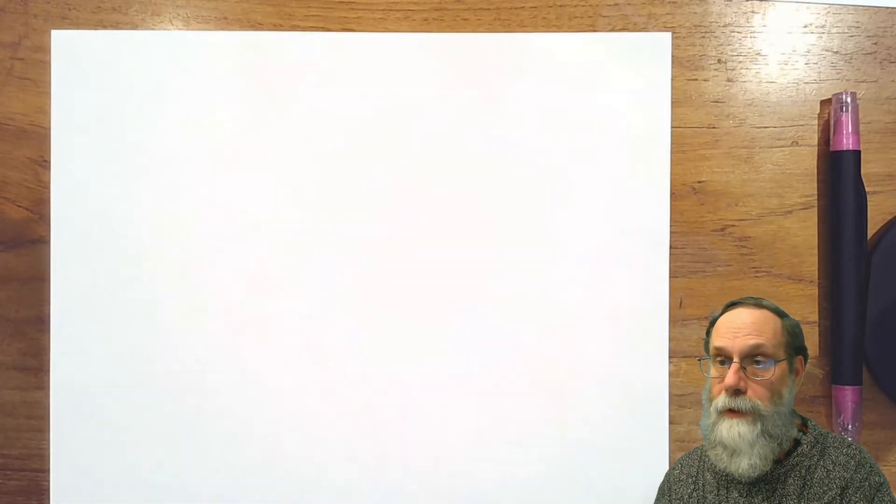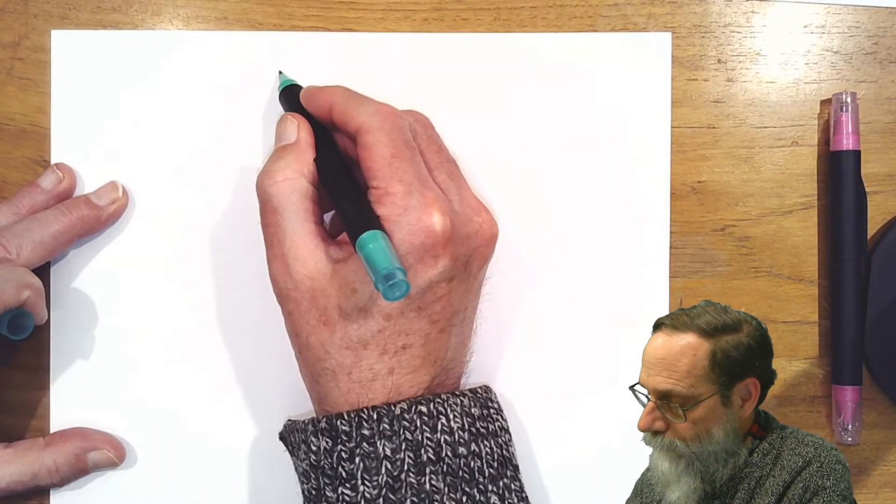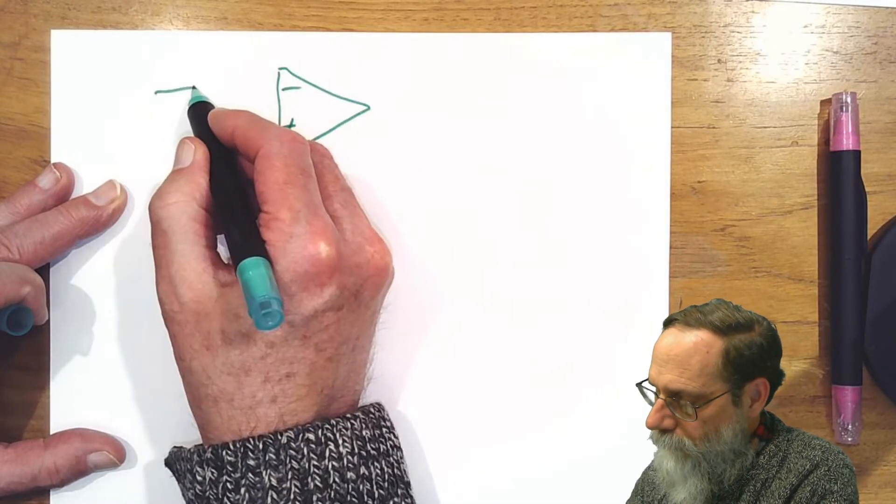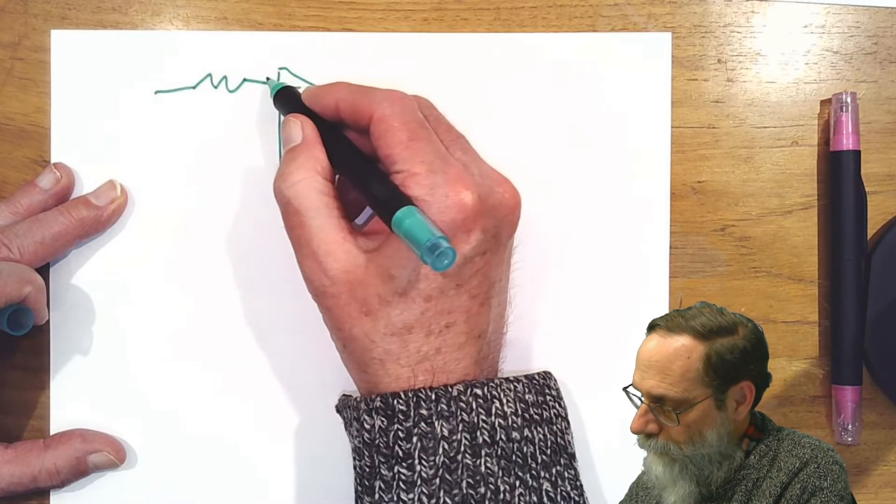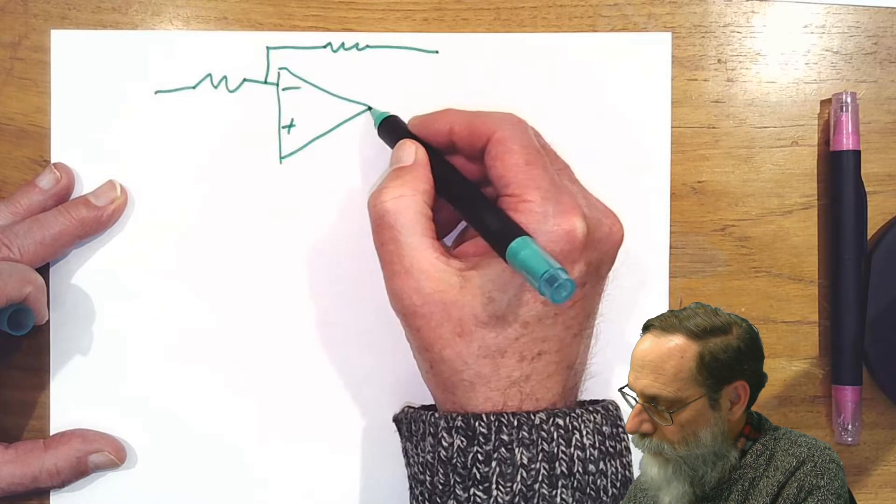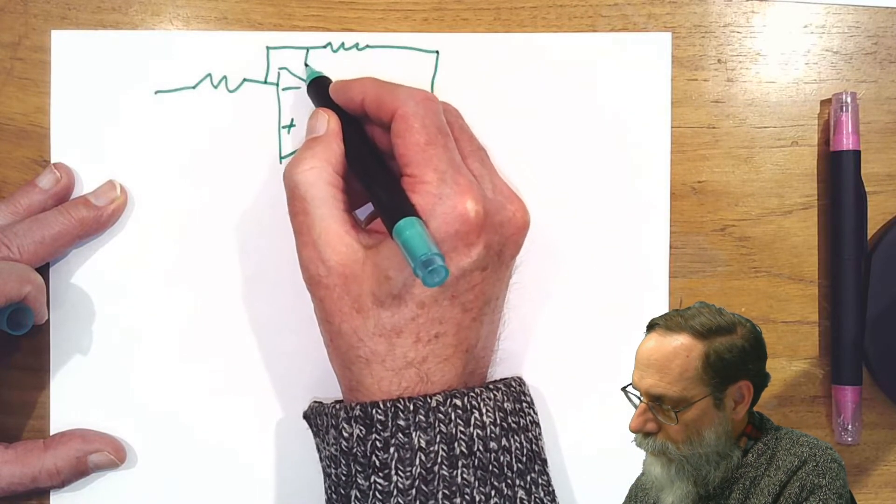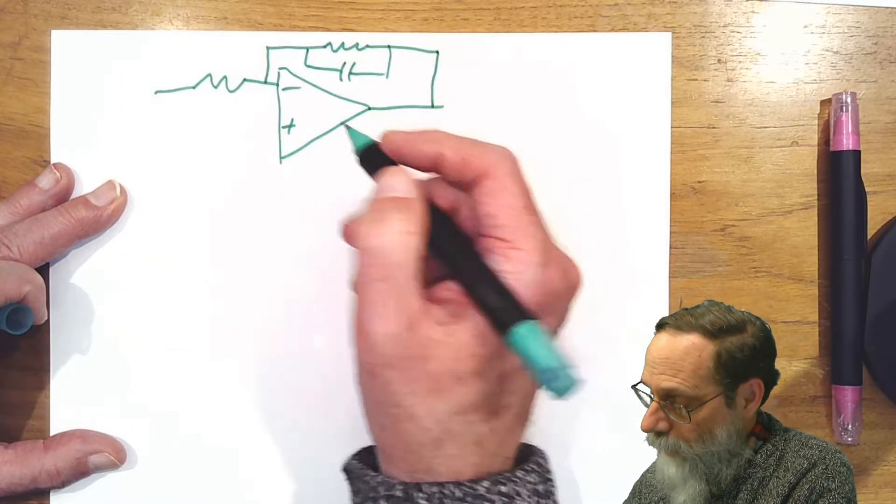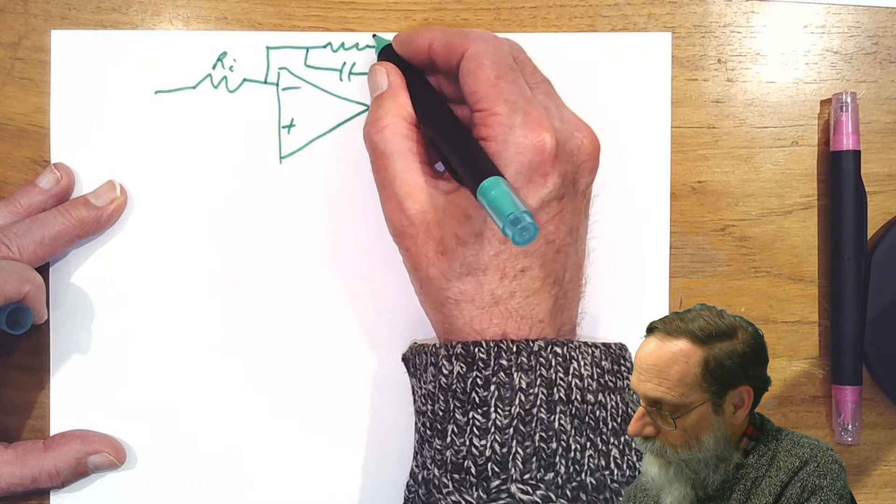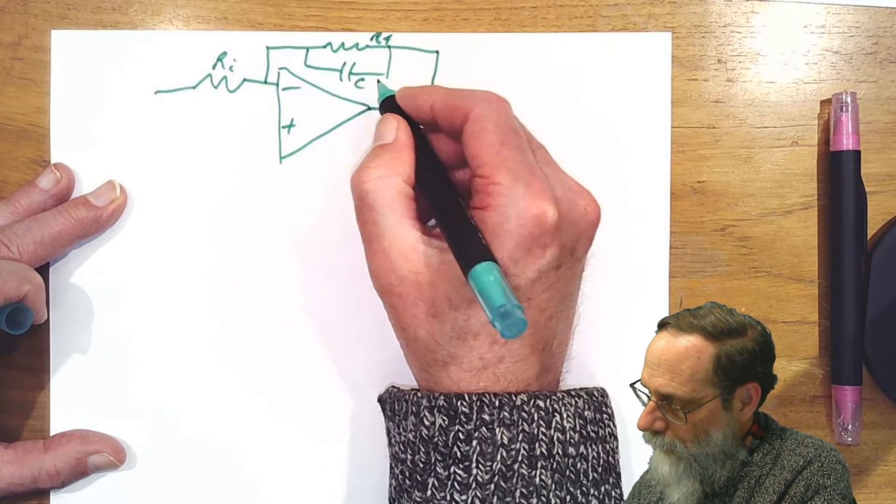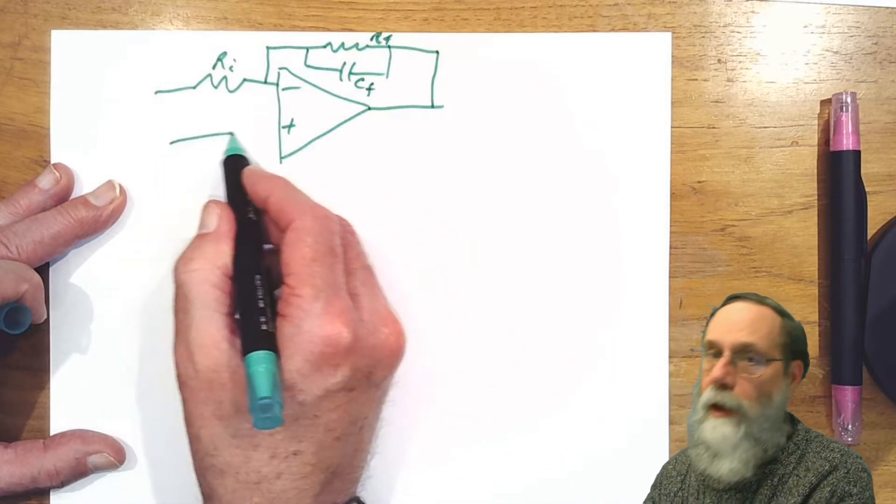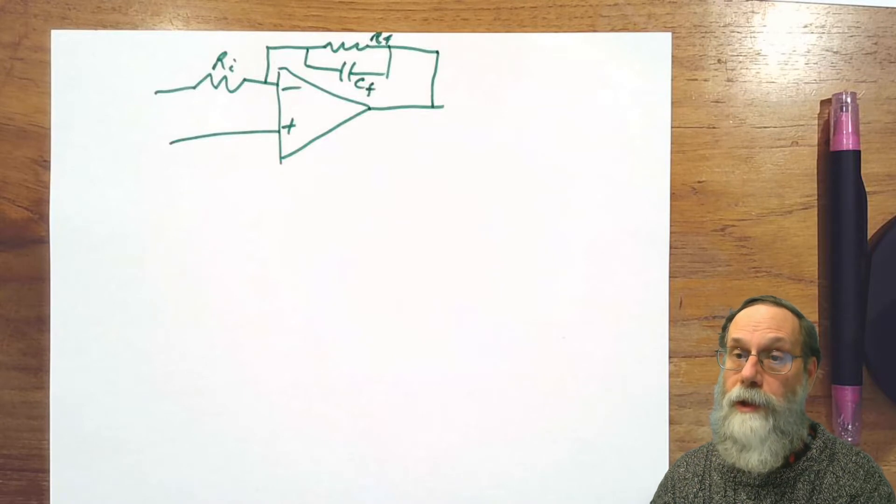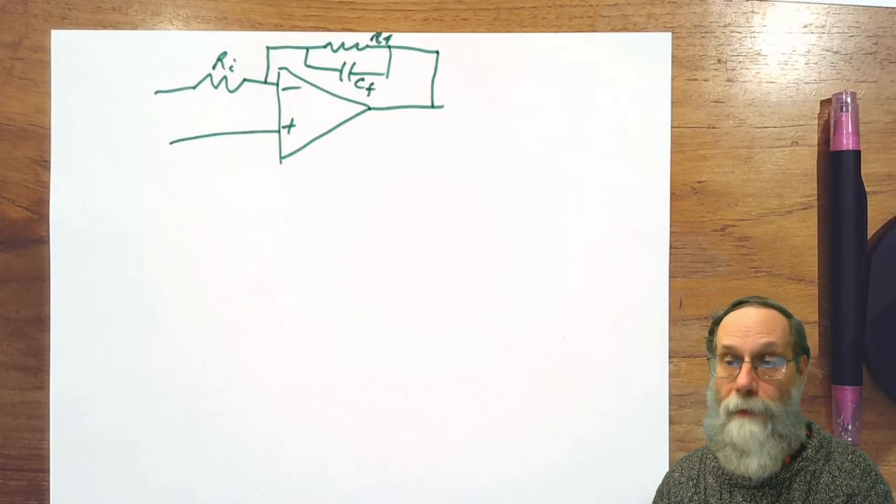Any active filter is going to have an amplifier, an input resistor, and a feedback impedance. The feedback impedance in this case is a resistor and capacitor in parallel. So we have an input resistor, a feedback resistor Rf, and a feedback capacitor Cf. The two inputs get hooked up to Vin, the input voltage, and to Vref, the constant reference voltage.